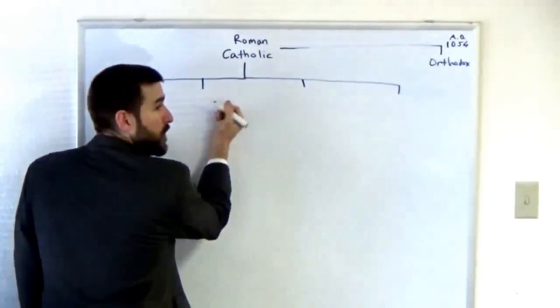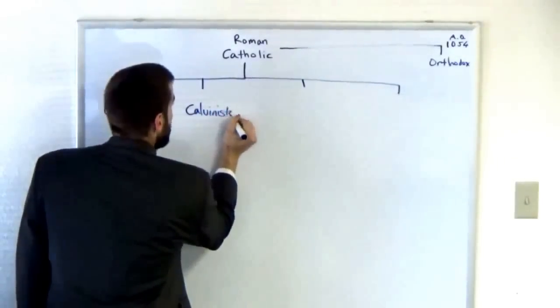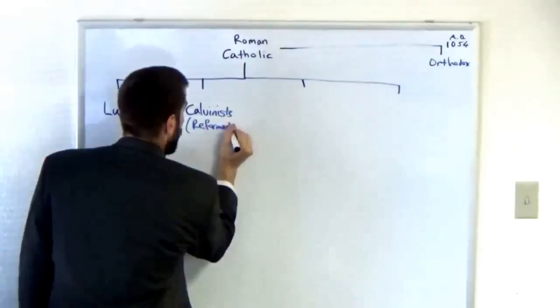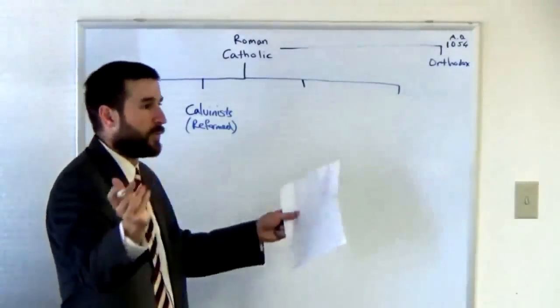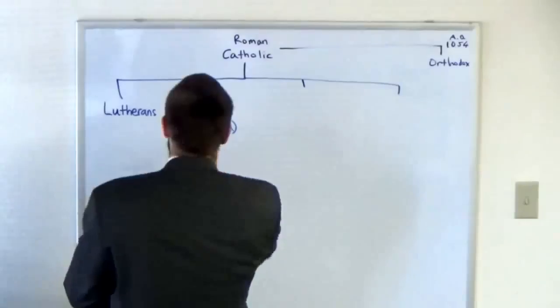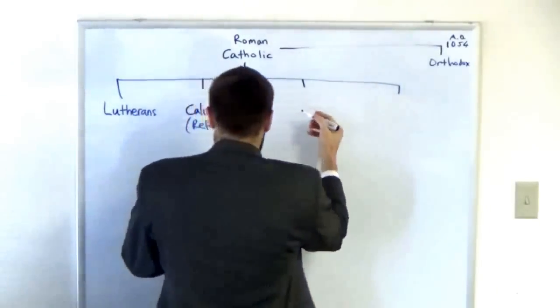Then you have another major reformer known as John Calvin. John Calvin is where you get your churches that have the name Reformed in them: Dutch Reformed, French Reformed, the Hungarians have a Calvinist Reformed movement. So you got your Lutherans, you got your Reformed or Calvinist.